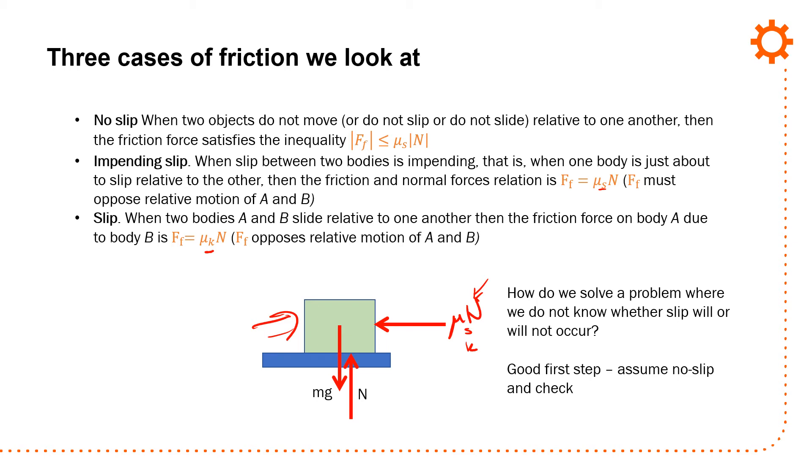How do you solve these problems? Generally, first assume no slip and then check. Once you do the no slip condition, calculate the friction force value. If it exceeds the maximum static friction value, you'll have kinetic friction. You'll see a number of examples - please take a look at those.